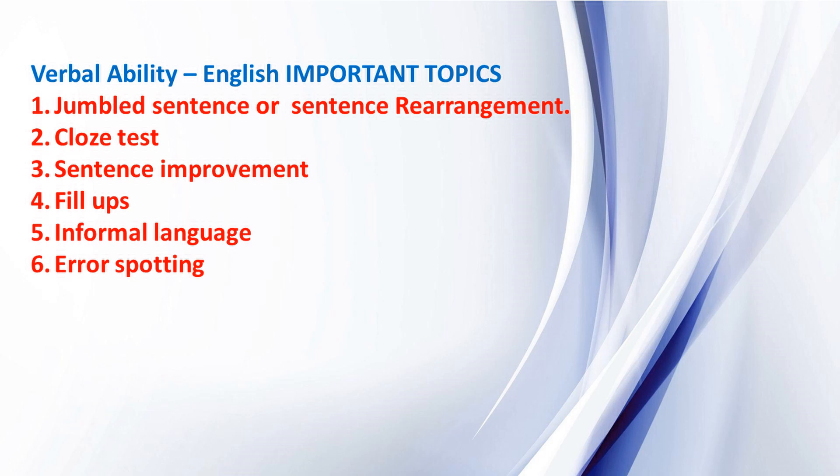For Verbal Ability, English important topics are: jumbled sentence or rearrangement, cloze test, sentence improvement, fill-ups, informal language, error spotting. Cloze test is similar like fill-ups but the questions in the format of passage. Concentrate more on English grammar rules to get good marks in error spotting and sentence improvement.